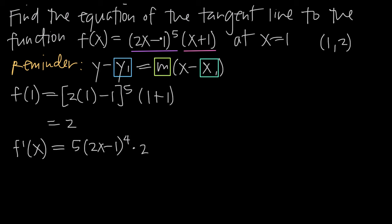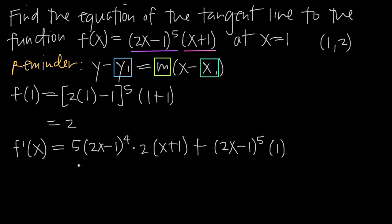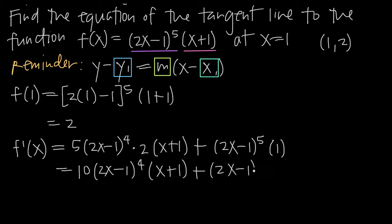Then we add the other scenario from the product rule: we leave the first function, 2x minus 1 to the fifth power, alone, and take the derivative of x plus 1, which is 1. So we add plus 2x minus 1 to the fifth times 1. Simplifying, we move the 2 to the front to get 10 times 2x minus 1 to the fourth times the quantity x plus 1, plus 2x minus 1 to the fifth.